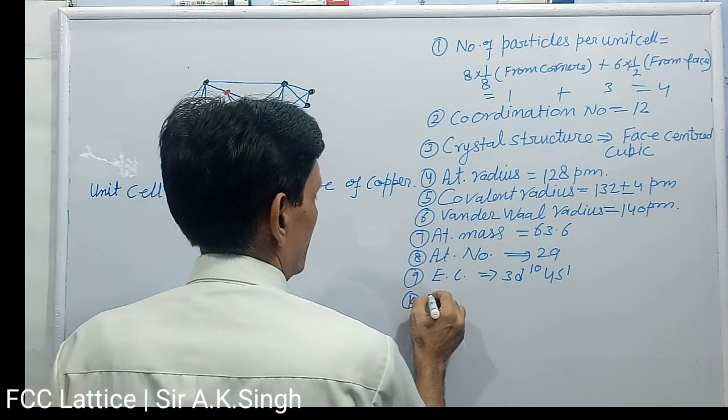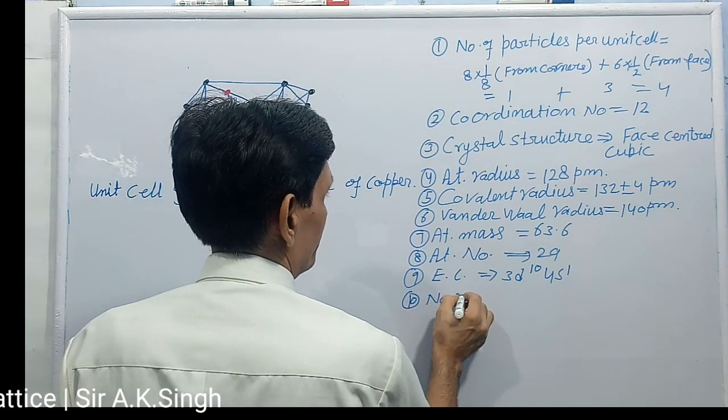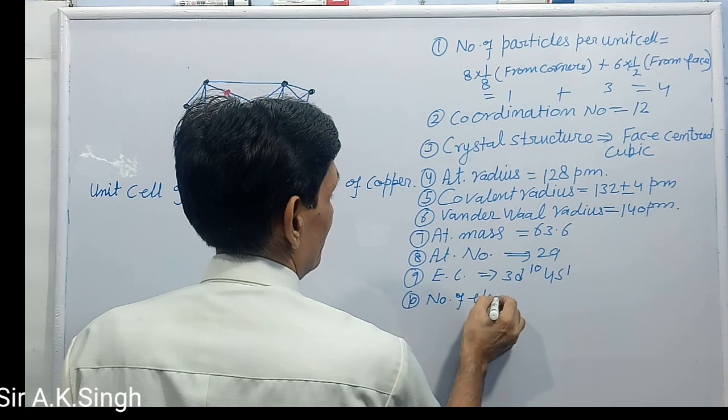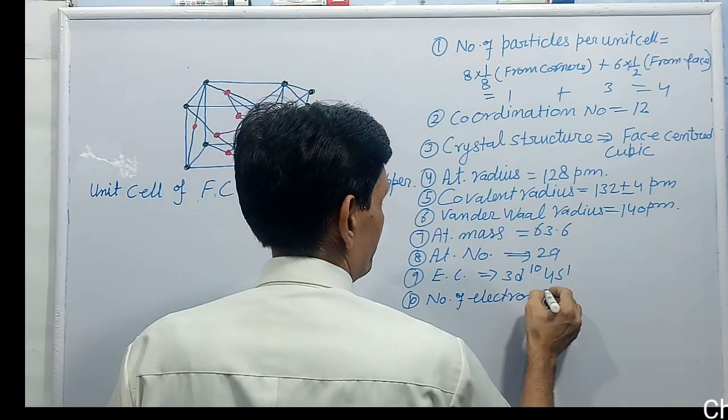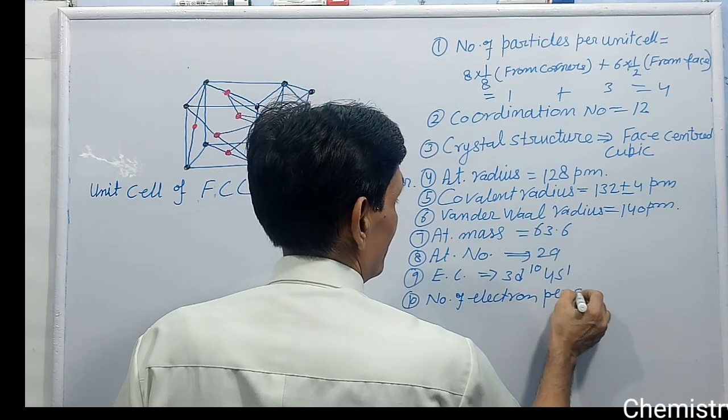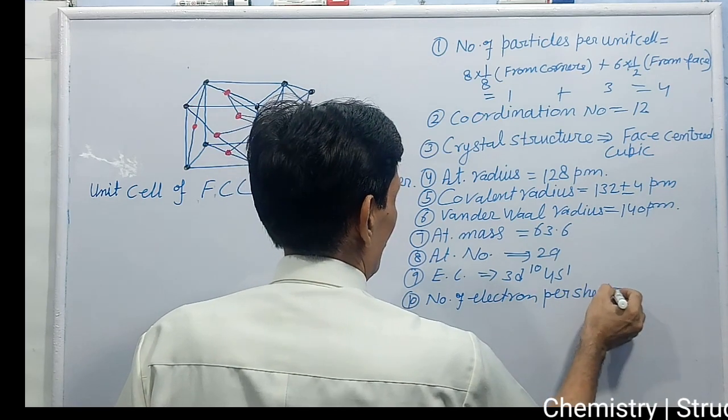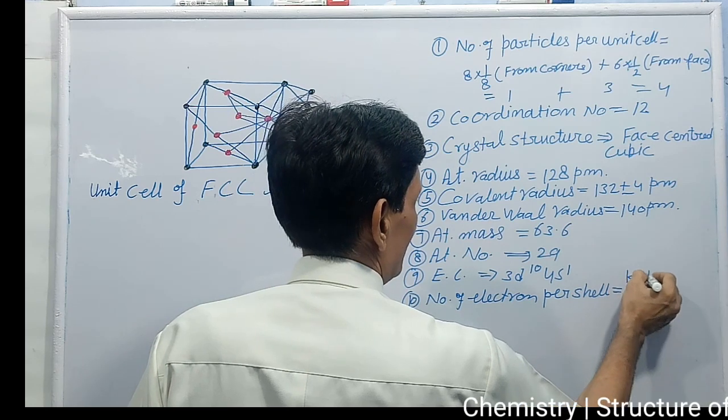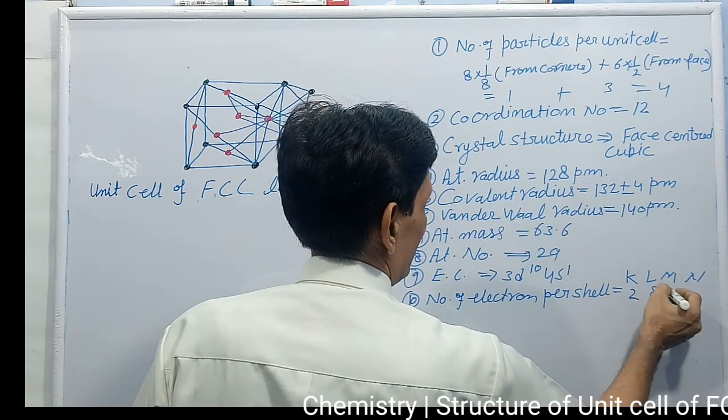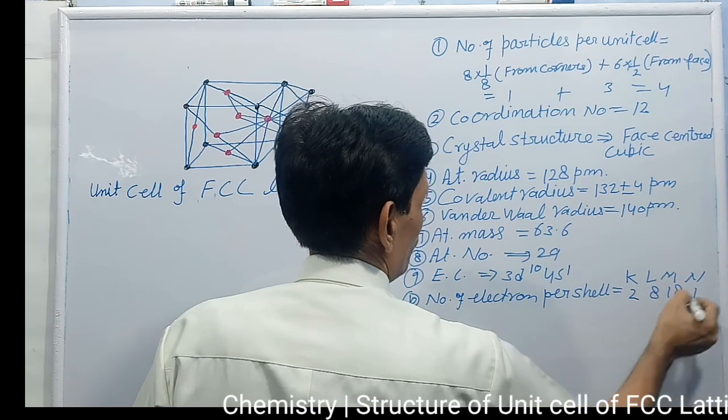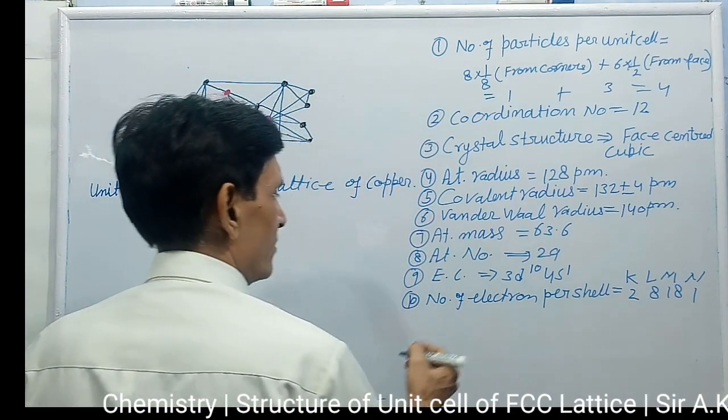Its number of electrons per unit cell, per cell. In each cell what is the number of electron K L M N, 2 8 18 1. Now.